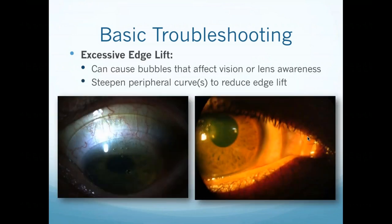On the flip side, you can also have excessive edge lift. Patients usually complain because they feel the edge as they blink, or the lens may move on the eye. It can also reduce vision — in one case, bubbles crept in at the edge and over time coalesced to obstruct the area above the pupil, causing both vision reduction and lens edge awareness. The solution is to steepen the peripheral curve to reduce the edge lift.